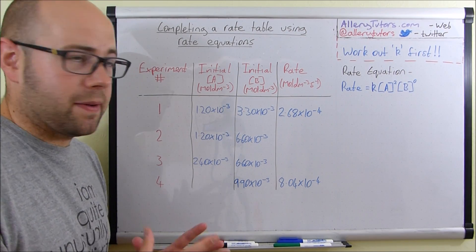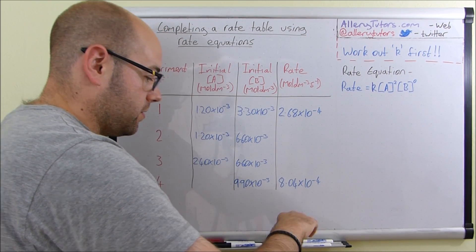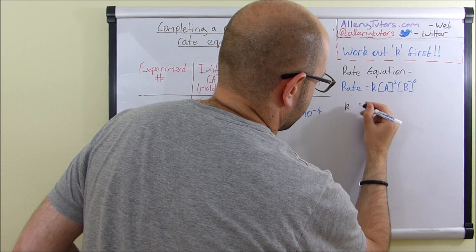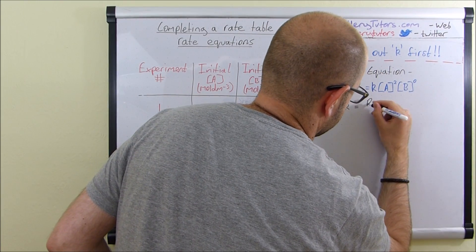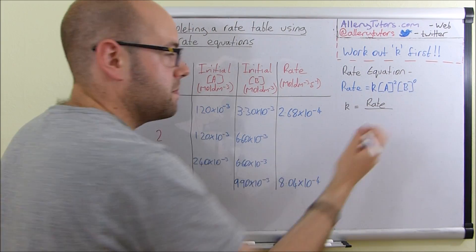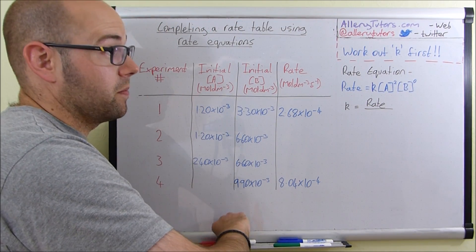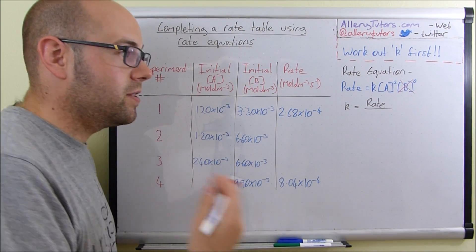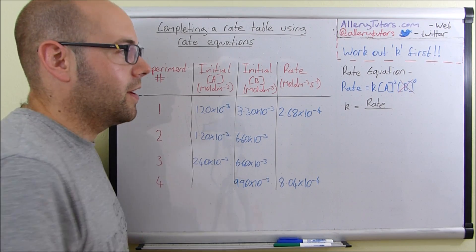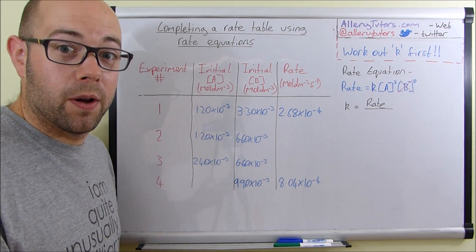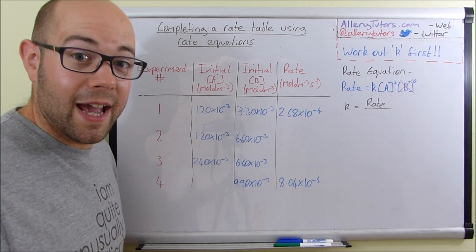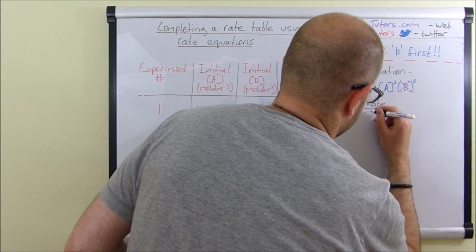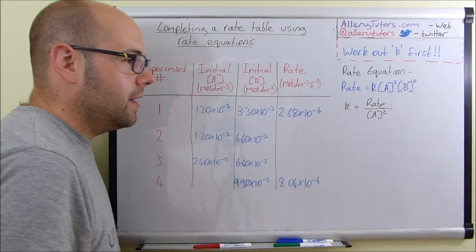We're going to rearrange the expression to find k. We can eliminate B because it's zero order, so it has no effect on rate. Mathematically, anything to the power of zero equals one, so multiplying [A]² by one just gives [A]². Therefore, k = rate divided by [A]².